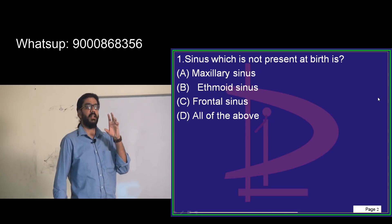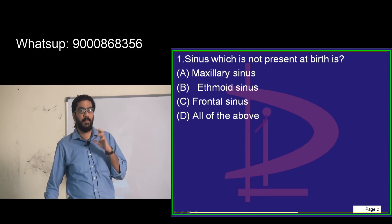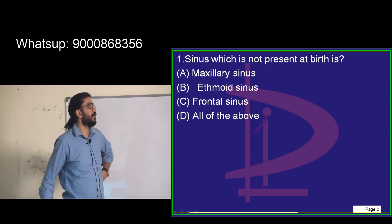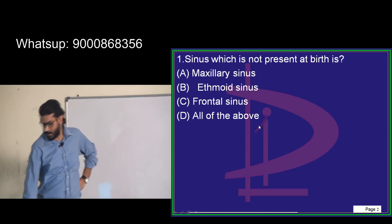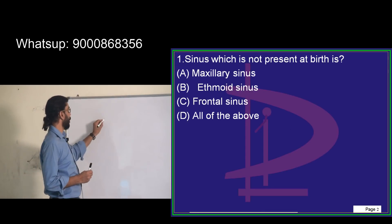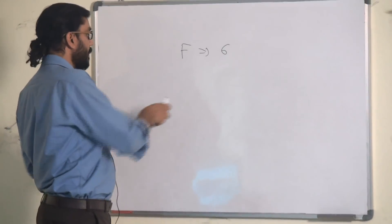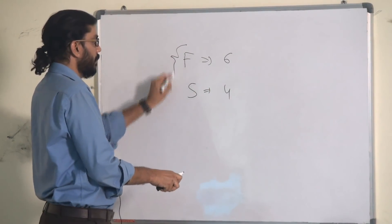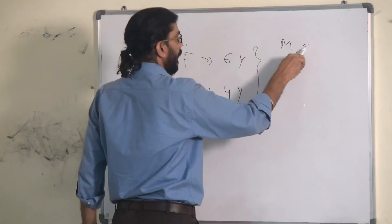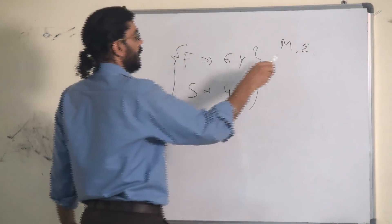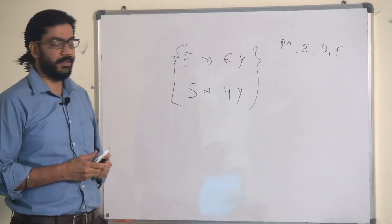The frontal sinus first shows radiological evidence at 6 years of age, and the sphenoidal sinus at 4 years of age. So the frontal sinus is not present at birth. At birth, the maxillary and ethmoidal sinuses are already present. The order of development is: maxillary, ethmoidal, sphenoidal, and frontal.